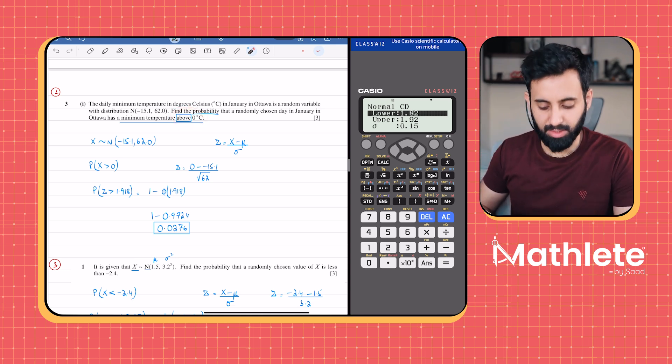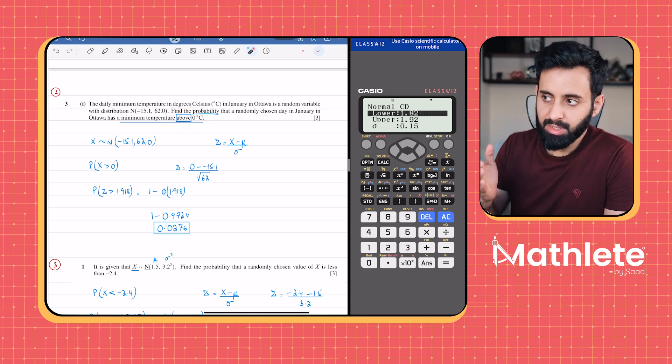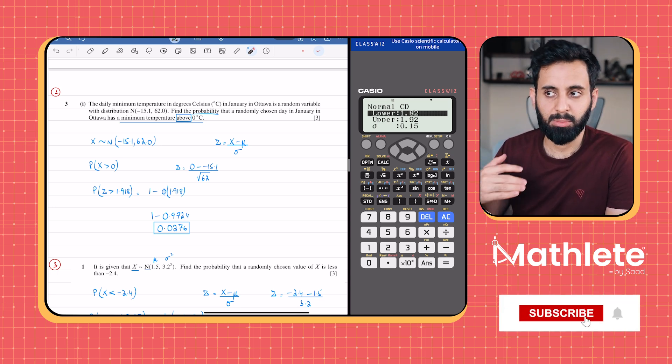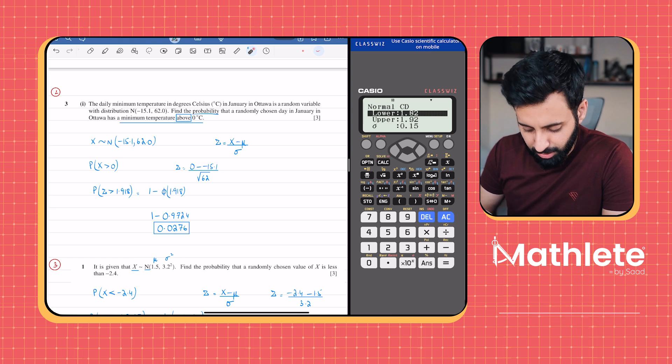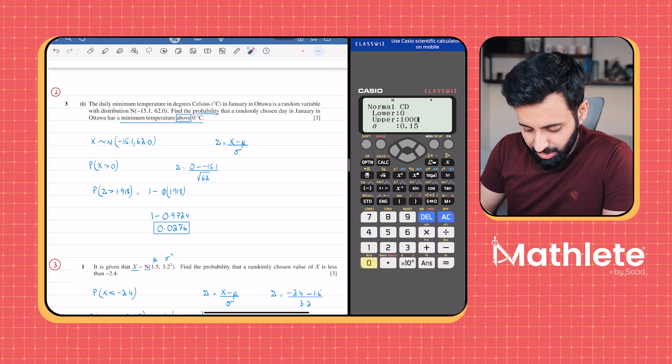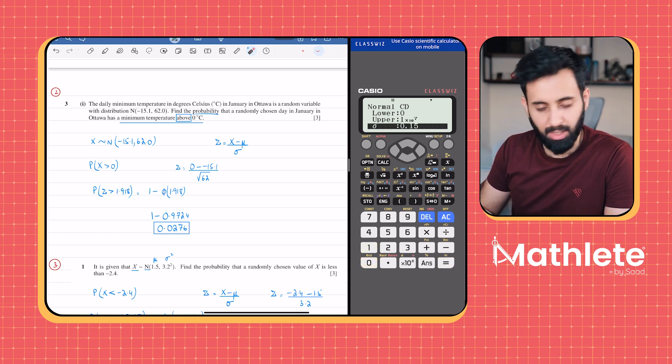In our calculator we enter the standard deviation. We have to find out the probability that a randomly chosen day in January has minimum temperature above zero degrees Celsius. Above zero means we know what it's greater than, but we don't know what it's less than. We have the lower limit but we don't have the upper limit. What do we do in that case? You enter the lower limit which is zero. If there is no upper limit given, you enter an extremely large value - could be one million, ten million, hundred thousand, doesn't matter. You'll notice you always get the same answer.